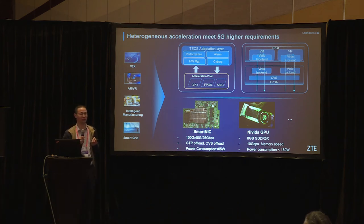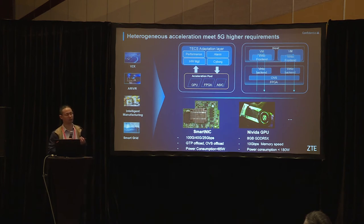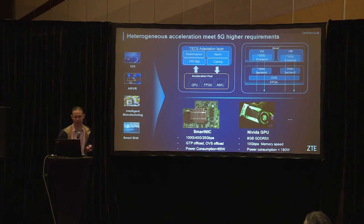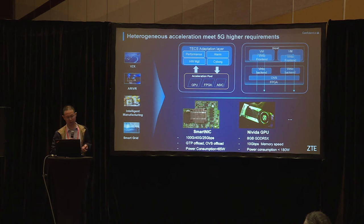We call them SmartNICs. One supports CPU offloads, specifically used by the gateway and UPF. We also have a standalone card that supports OVS offloads to support standard applications, improve network capability, and reduce time delay for the computing part.